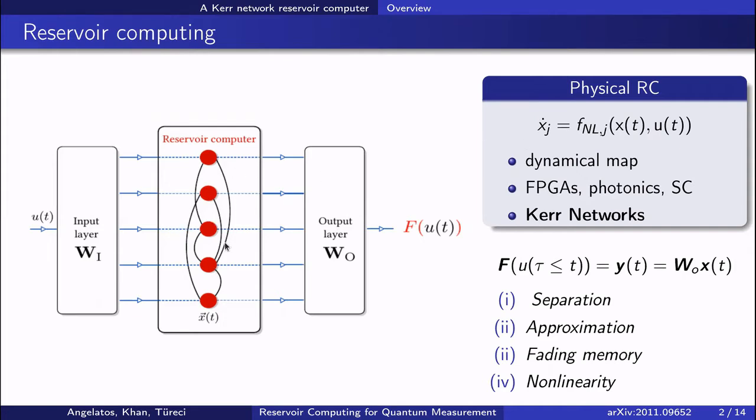Regardless of the physical manifestation, the dynamics of the reservoir map this signal into the reservoir's high-dimensional phase space. Each reservoir degree of freedom is some non-linear function of the input and its history. The computational output is then simply formed by taking a linear combination of these degrees of freedom.